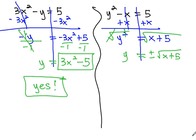In other words, y is either equal to the positive square root of x plus 5, or y is equal to the negative square root of x plus 5.